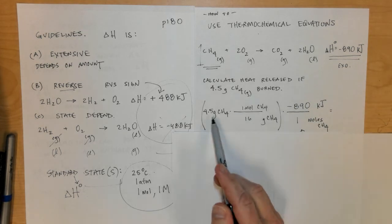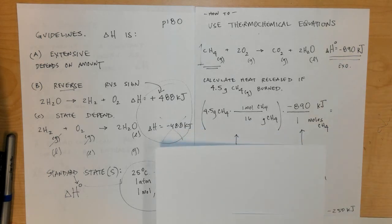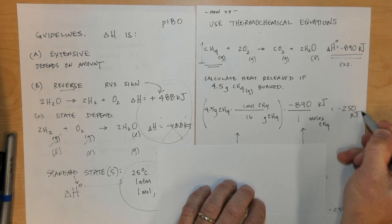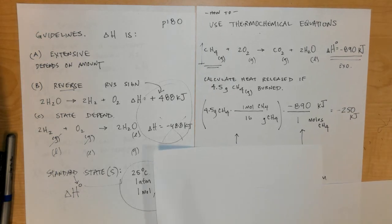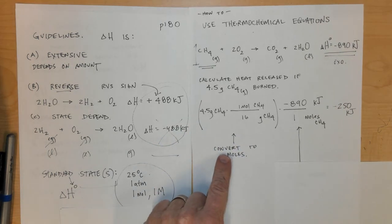On my calculator, 4.5 divided by 16 times negative 890 should end up with negative 250 kilojoules. Take a look at each of these terms that I did. First of all, notice I converted to moles. That was step number one.